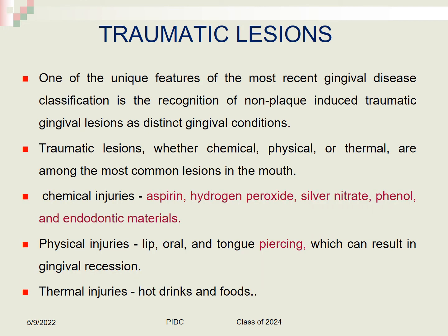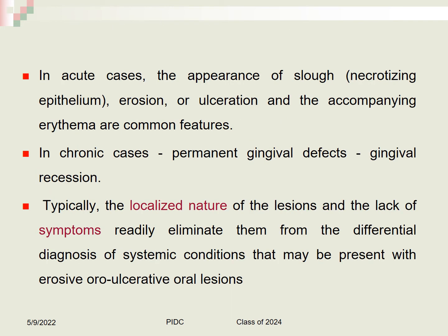Traumatic lesions of the gingiva can be chemical, physical, or thermal. Chemical injuries may be related to aspirin, hydrogen peroxide, silver nitrate, phenol, and endodontic materials. Physical injuries include human-induced injuries from tongue piercing, causing recession. Thermal injuries can result from hot drinks and foods.